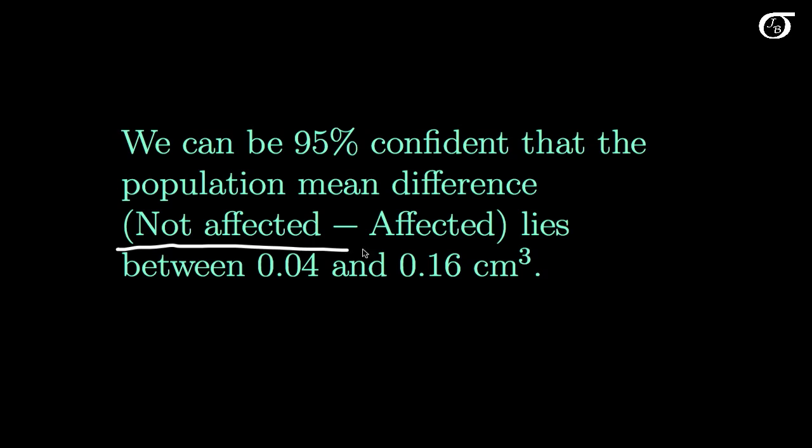We took our differences to be the not affected minus the affected in this situation. So the fact that this interval lies entirely to the right of 0 does tell us something. It looks like the twin not affected by schizophrenia has a larger volume of the right hippocampus on average.